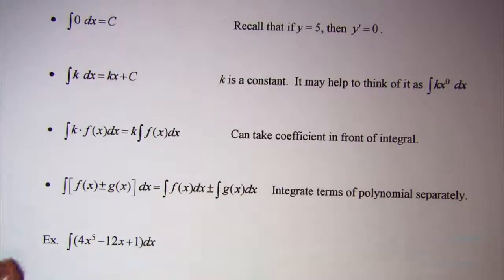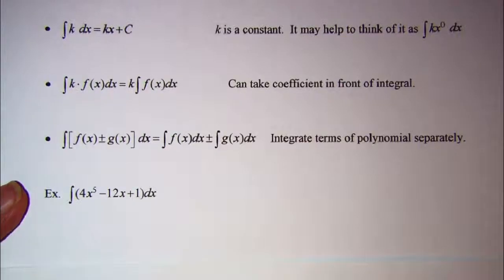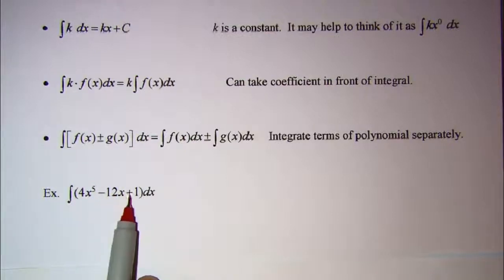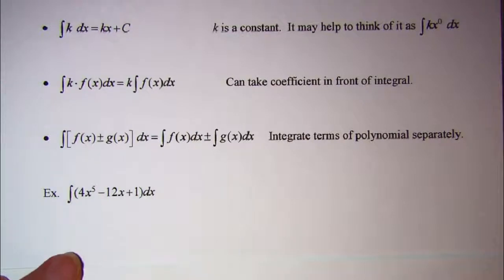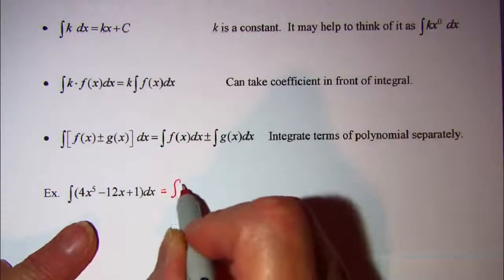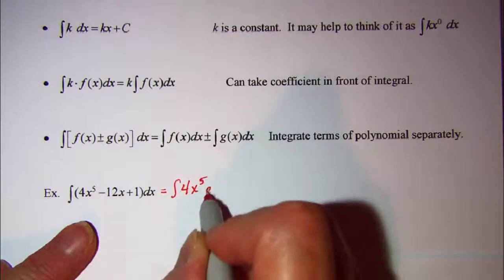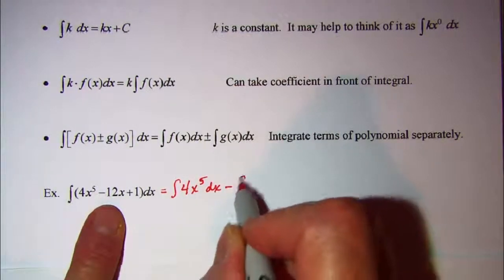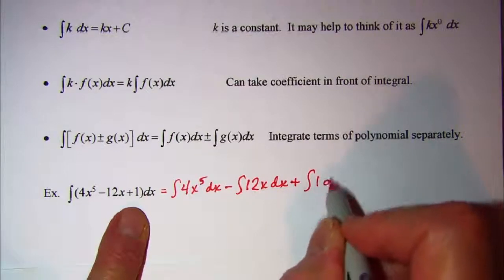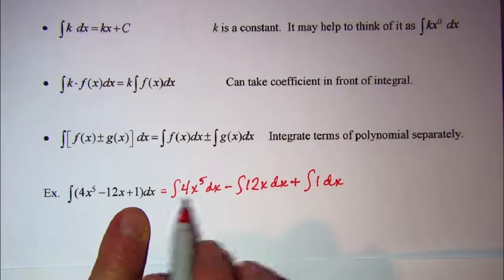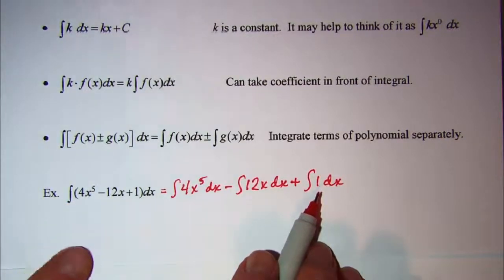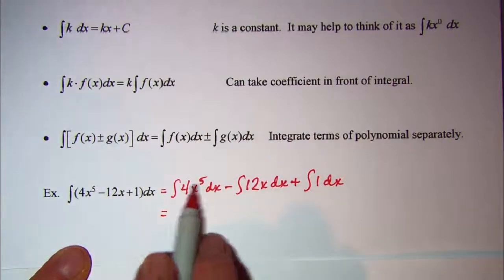Let's look at a few examples. We're asked to integrate 4x to the 5th minus 12x plus 1 dx. We can integrate these separately: the integral of 4x to the 5th, minus the integral of 12x, plus the integral of 1. After a while you probably won't write this step and will integrate each term straight from the problem.